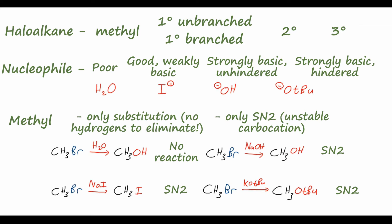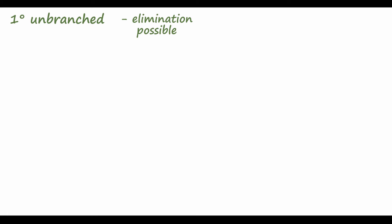Primary unbranched haloalkanes can undergo elimination because there is now an adjacent carbon to pull off a hydrogen and form an alkene. But again, we'll only undergo bimolecular reactions — SN2 and E2 — because that primary carbocation is very unstable. Only strong nucleophiles will react to any appreciable extent with primary unbranched haloalkanes.